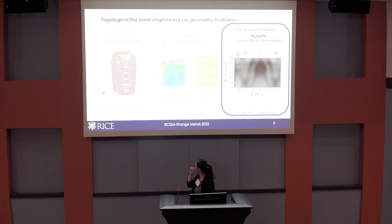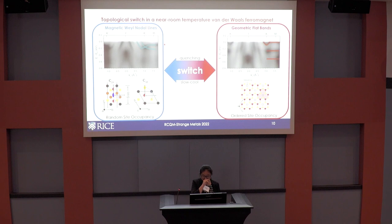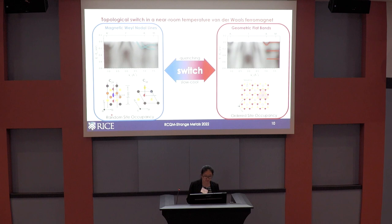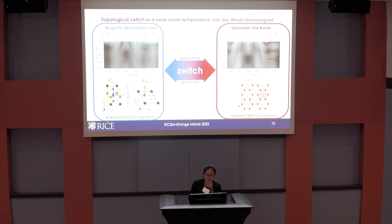That brings me to the last topic, which we're quite excited about. The end result is that we find we're able to observe a topological switch between two distinct electronic phases: one is a magnetic Weyl nodal line phase, and the other features flat dispersions. We can understand the origin of these topological features based on crystal symmetry, and we can tune the switch back and forth between the two phases via a simple annealing and quenching process. Our understanding of the switchability is due to a very interesting ordering of iron vacancies in this material.